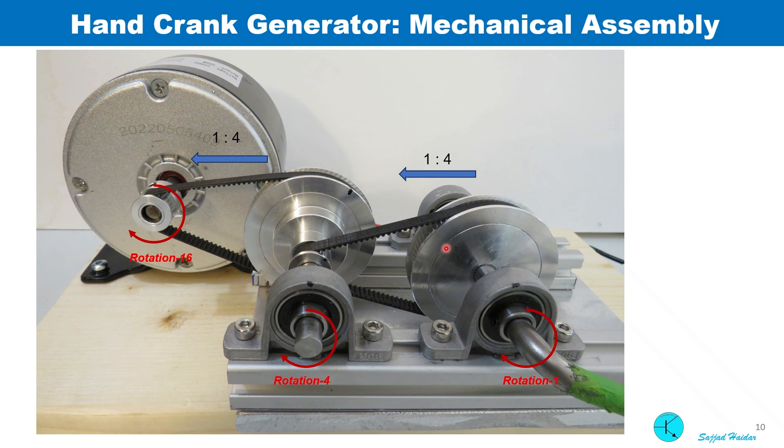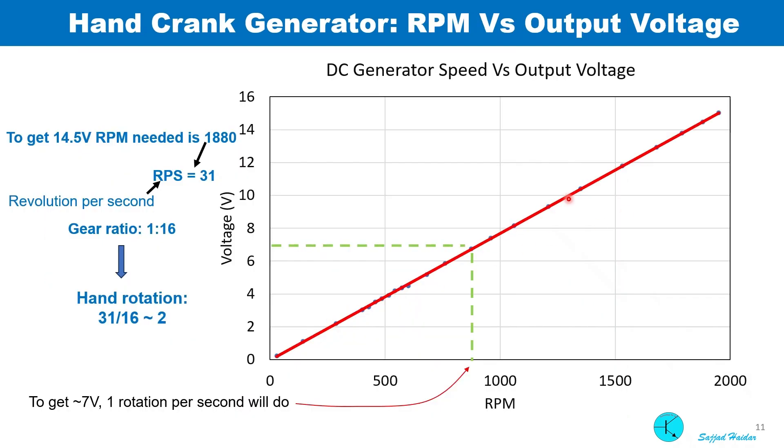A close-up view is shown of the mechanical parts. This is the previous plot which shows the speed versus output voltage. To get 14.5 volts at the output, rotational speed needed is 1880 RPM, which means 31 revolutions per second. As we know that the gear ratio is 1 to 16, hand rotation needed is 2 per second. Similarly, we can see for one rotation per second, we can get 7 volts at the output.